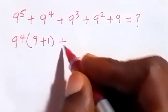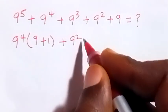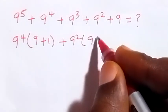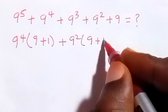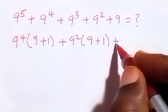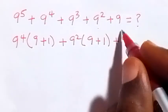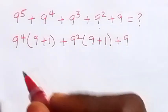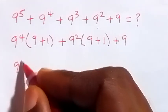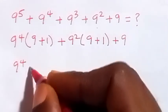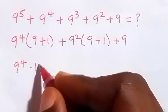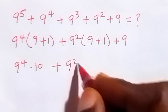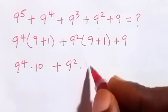Also from these two we factor what is common. We have plus 9 squared, then in the bracket what is left here is 9, then we have plus 1, then plus 9. So from here let's add what is in the bracket, and this will be 9 raised to power 4 multiplied by 10 — since 9 plus 1 is 10 — also plus 9 squared multiplied by 10.